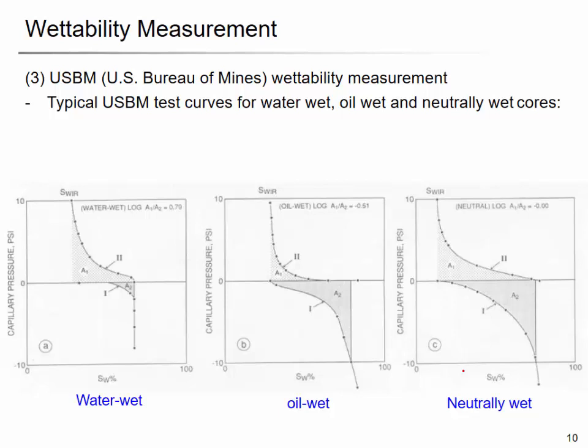Instead of looking at total imbibition versus spontaneous imbibition, the USBM method looks at the energy perspective — the area in the capillary pressure graph. In the water-wet case, the USBM wettability index is about 0.79; for the oil-wet case it is negative, about minus 0.51; and at neutral wettability it is almost zero.